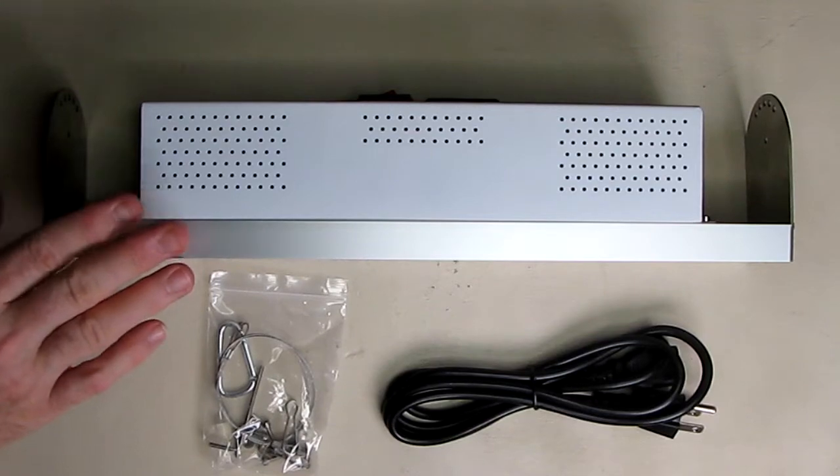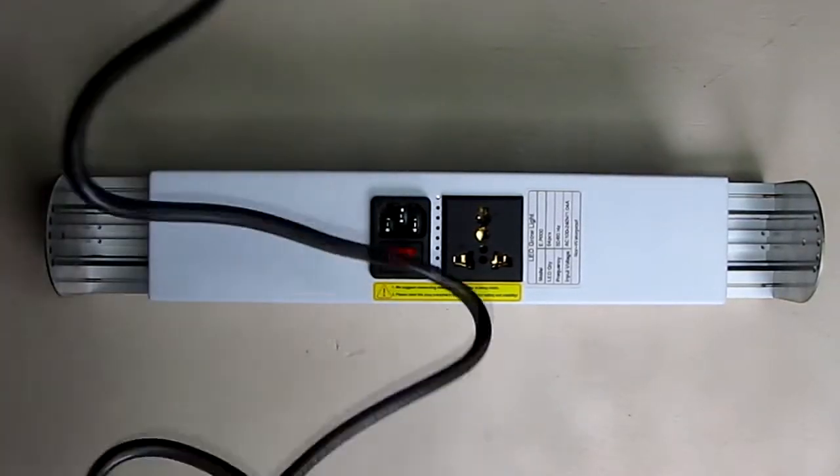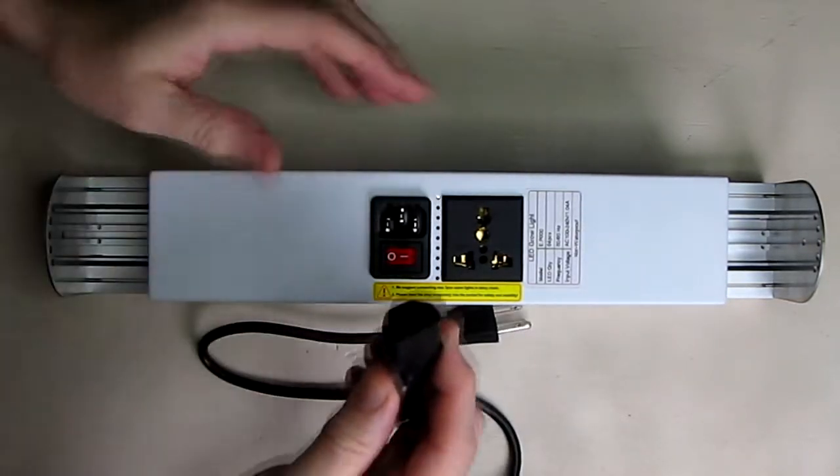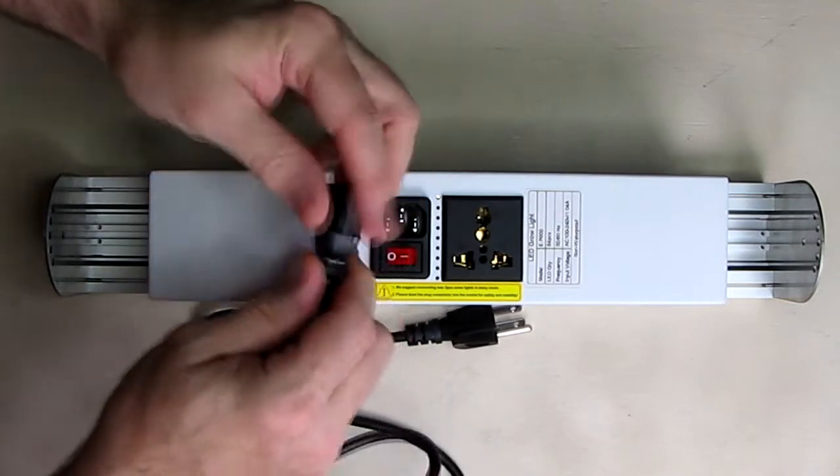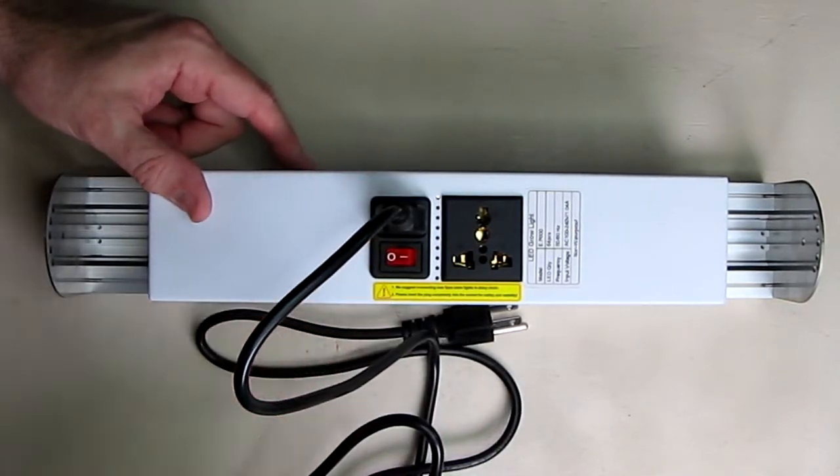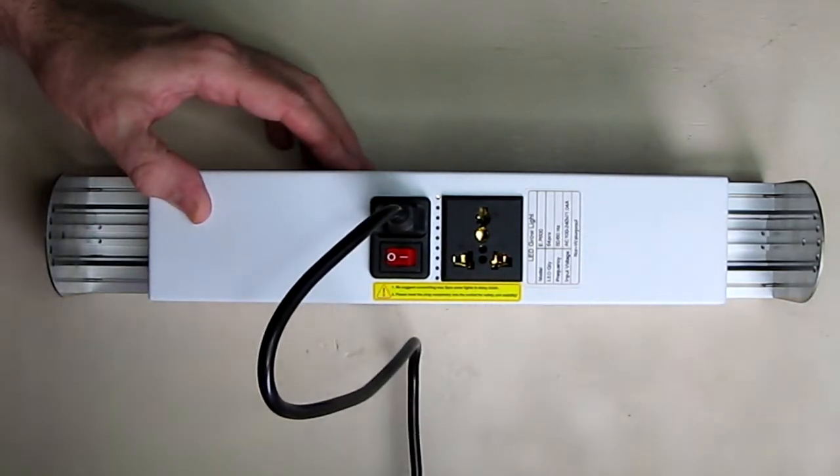So first thing we're going to do is power this up and see what it looks like. The power cord is very simple. It has this included very nice flexible power cord with the US plug on there, and it looks like it's just a little over six feet. So we're just going to plug it in right there and you have your power switch right there. So I'm going to plug this end into 115 volts.